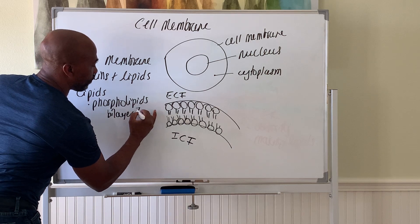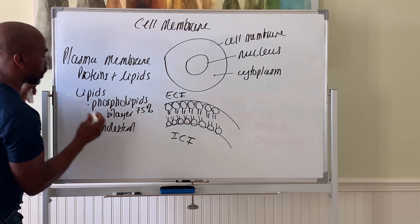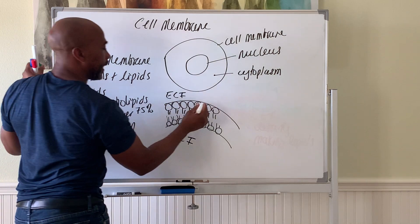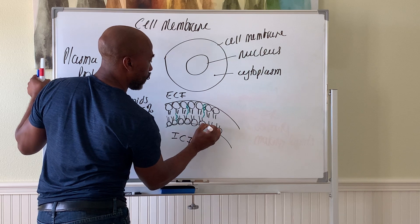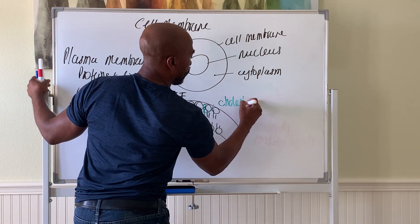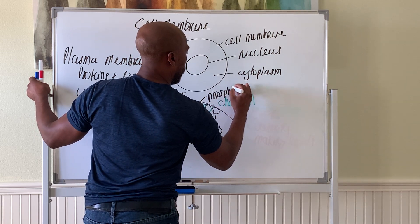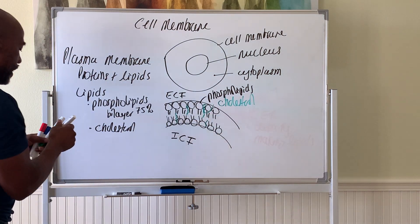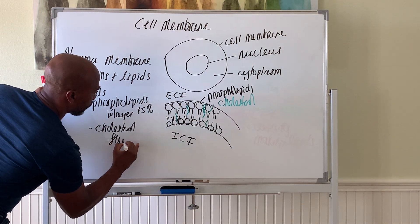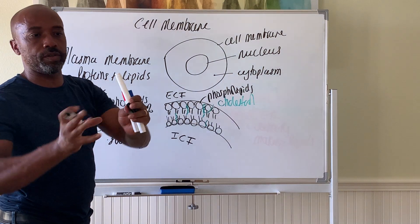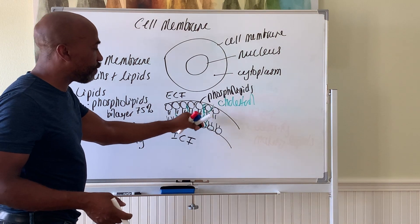Phospholipids make up about 75% of lipids in the membrane. The next major group of lipids is cholesterol. Cholesterol is usually located between the phospholipids along the cell membrane. Its job is to promote membrane fluidity — it allows the membrane to be flexible so it can bend around corners as the cell needs to contort.